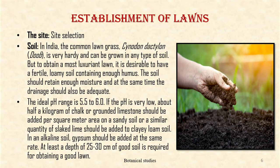Soil: In India, the common lawn grass, Cynodon dactylon i.e. Doob or Bermuda grass, is very hardy and can be grown in any type of soil. But to obtain a most luxuriant lawn, it is desirable to have a fertile loamy soil containing enough humus. The soil should retain enough moisture and at the same time drainage should also be adequate. The ideal pH is 5.5 to 6.